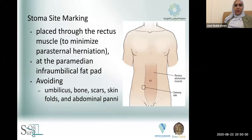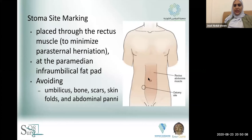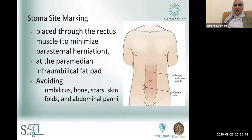The perfect placement is through the rectus muscle to minimize parastomal herniation. It's at the paramedian infraumbilical fat pad. Avoid the umbilicus, bony prominences, scars, and skin folds. In obese patients, avoid the abdominal pannus.